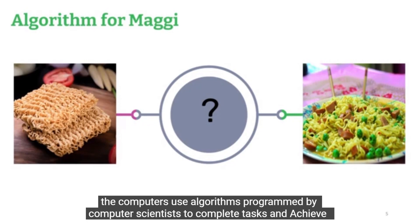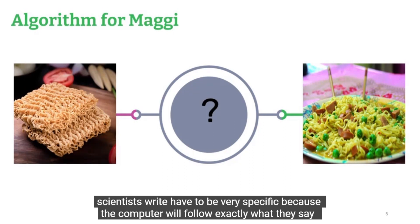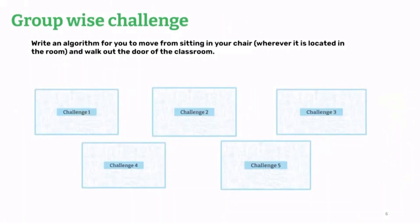Computers use algorithms programmed by computer scientists to complete tasks and achieve goals. It is important to know that computers are very literal. The algorithms that computer scientists write have to be very specific because the computer will follow exactly what they say.